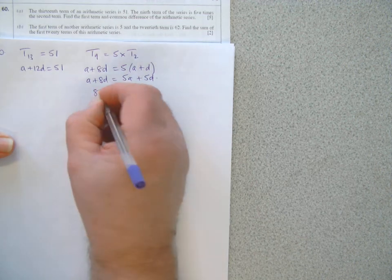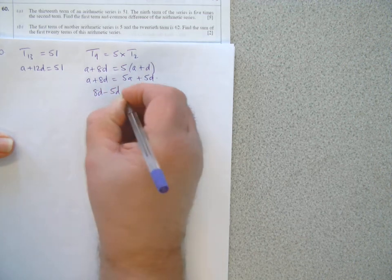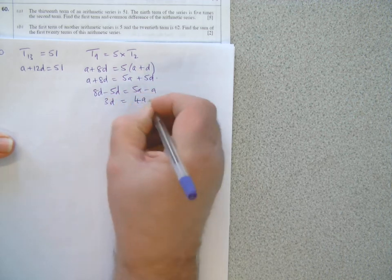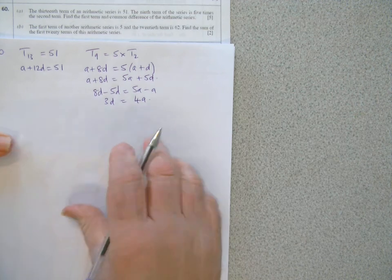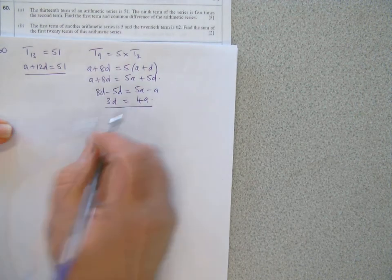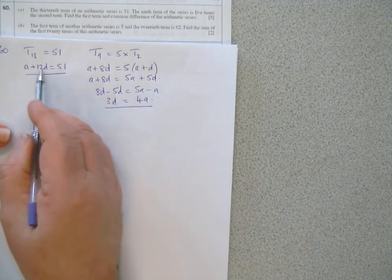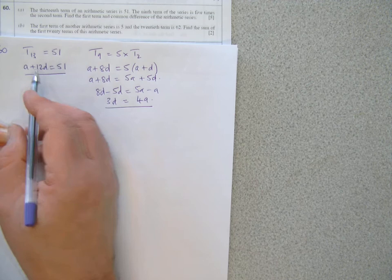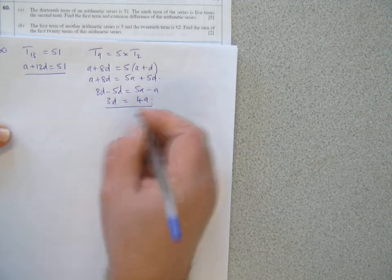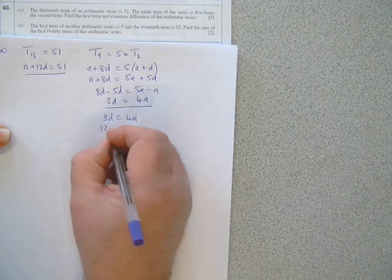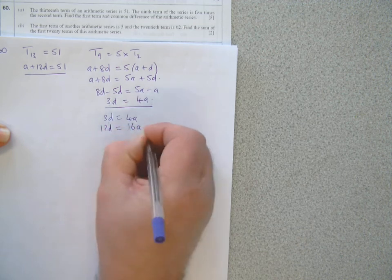Take the Ds to one side, 8D minus 5D, take the A, 3D equals 4A. So I'm solving that with that. I can substitute for 3D into the first one. I don't need to go to fractions, so 3D is 4A. So I scale that up, and times by 4, I get 12D is 16A.